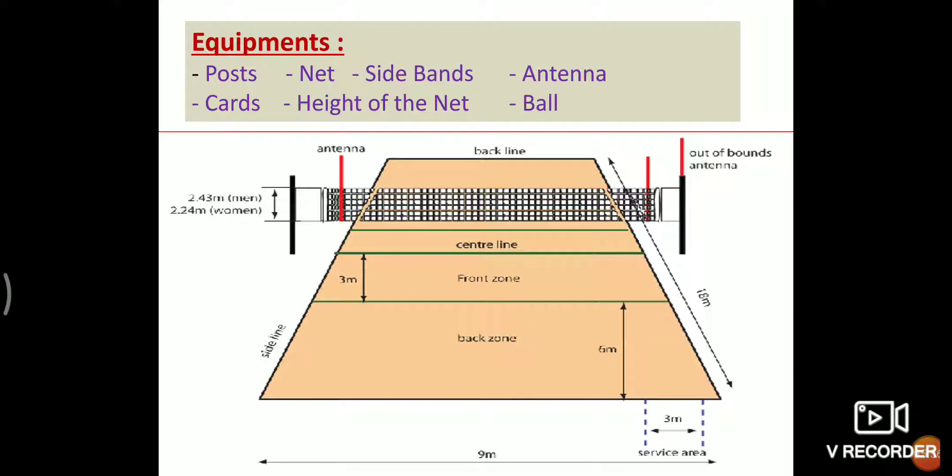Net: The net is 1 meter wide and 9.50 meters long, made of 10 centimeter squares. At each top there is a horizontal band 5 centimeters wide made of two-fold white canvas sewn along its full length. Each extreme end of the band has a hole through which passes a cord fastening the band to the post for keeping its top tight.